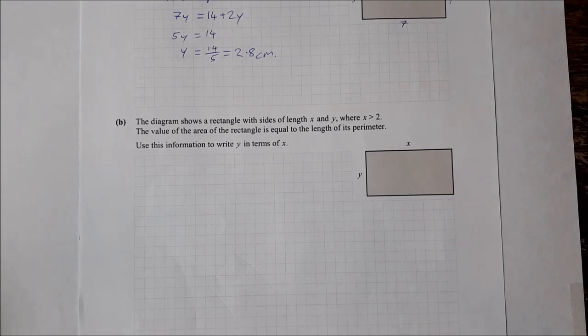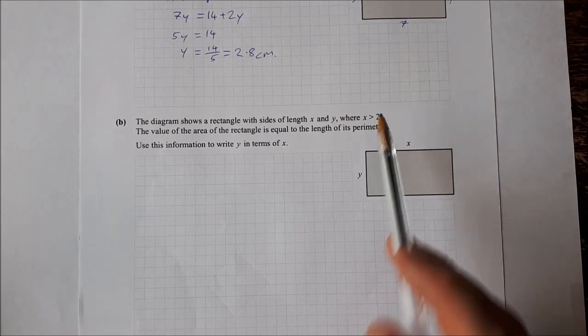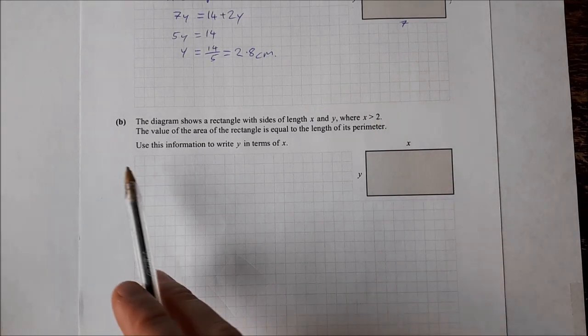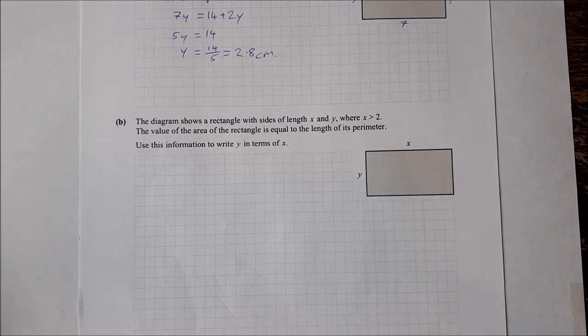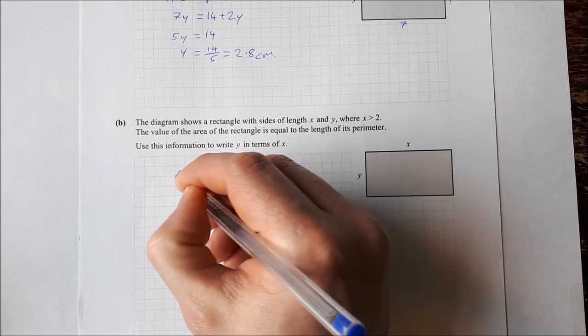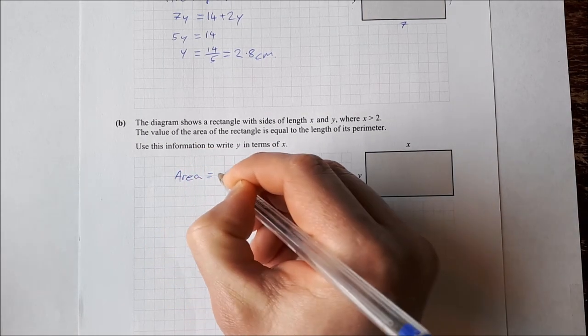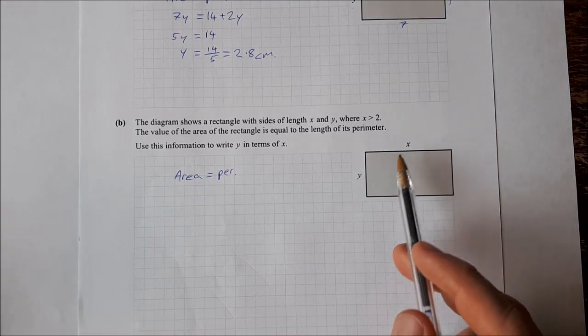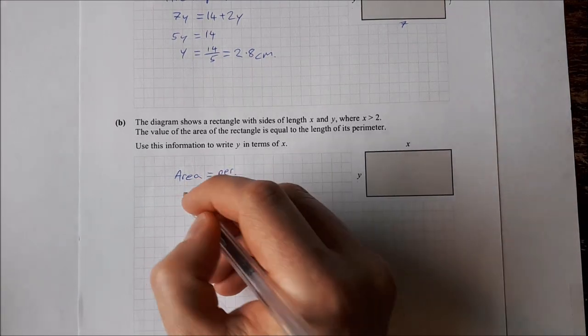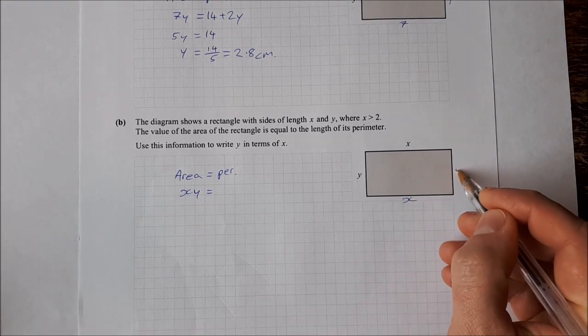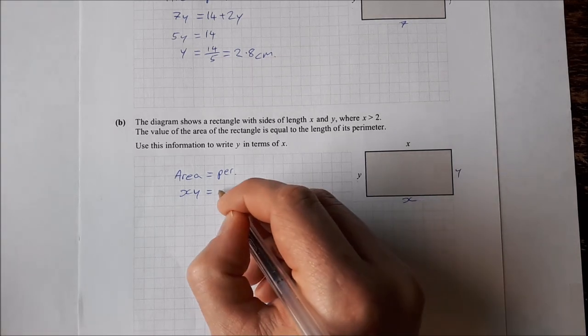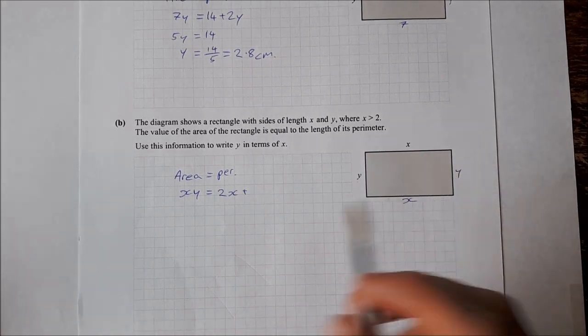In the next one, the diagram shows a rectangle with sides of length x and y where x is greater than 2. The value of the area of the rectangle is equal to the area of the perimeter. Use this information to write y in terms of x. So, same thing. Area is equal to perimeter. Well, the area is x times y. So that's xy. The perimeter, then, I have x, x, y, y. So that's 2x plus 2y.